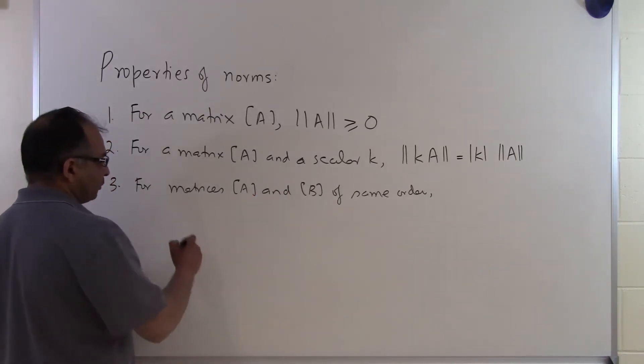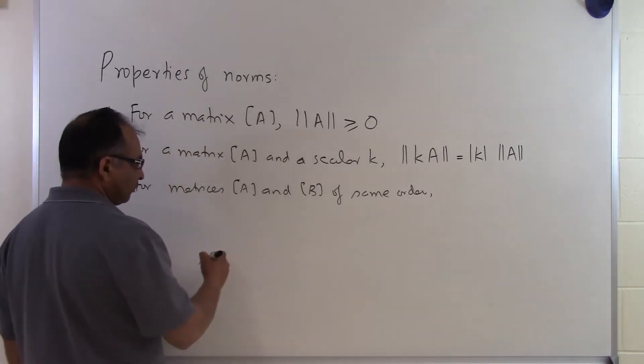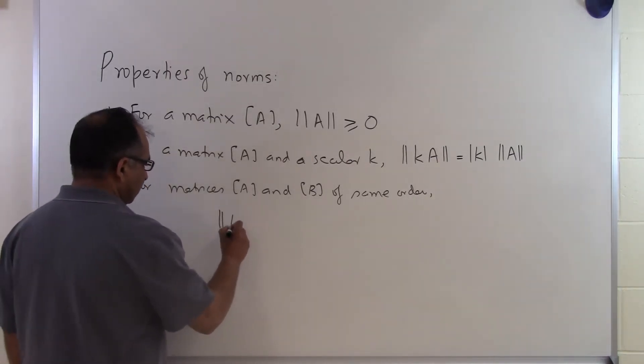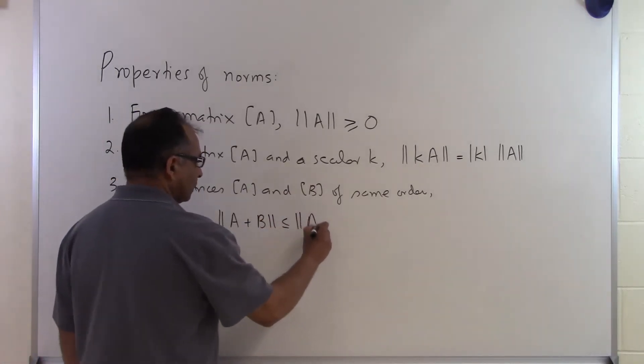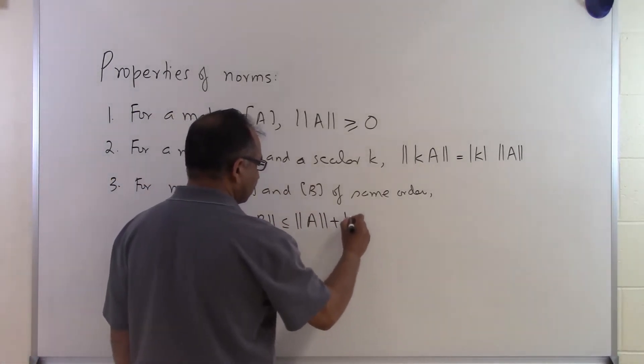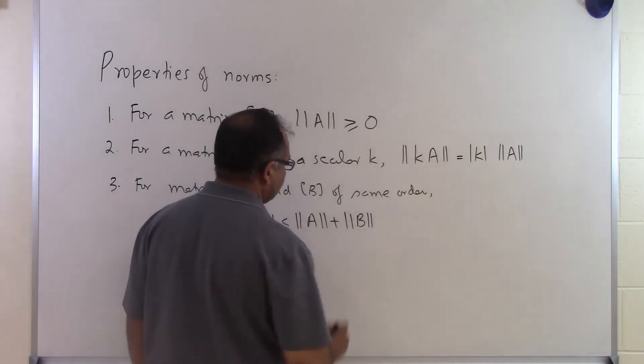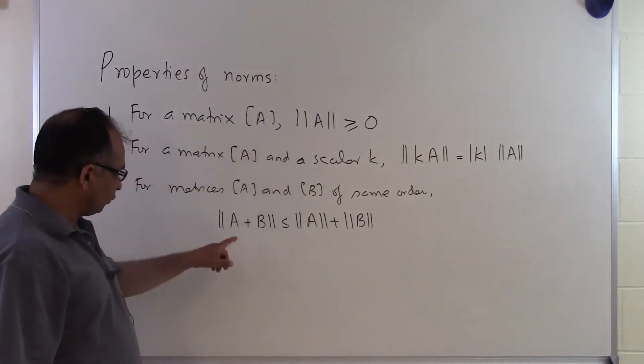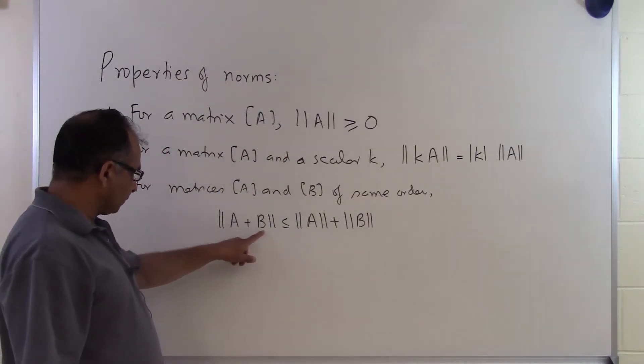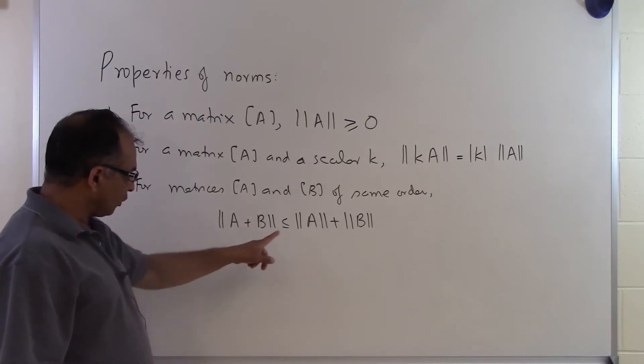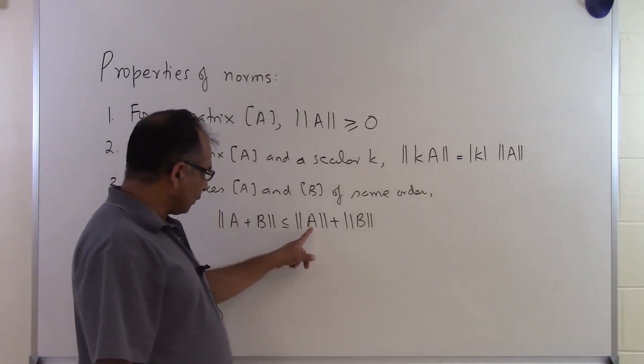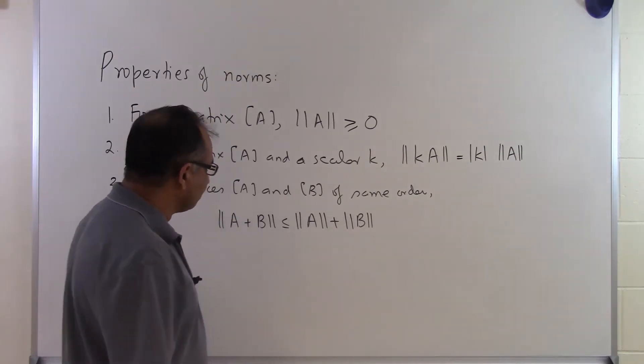The property corresponding to the norm of two matrices A and B which are of the same order is as follows: the norm of A plus B is less than or equal to the norm of A plus the norm of B. Which basically means that if you take two matrices and add them up, of course they have to be the same order, you add them up, you find the norm of that, that number will always be less than or equal to whatever is the addition of the norm of A and the norm of B.